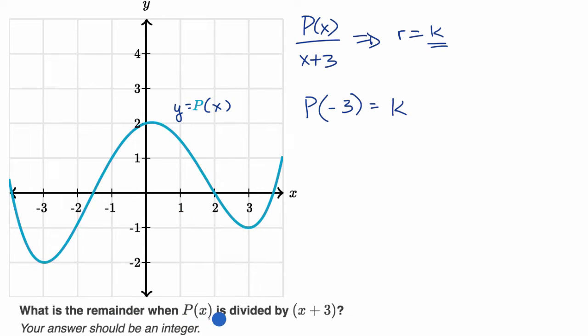What is the remainder when P(x) is divided by x plus three? It's going to be equal to P of negative three. P of negative three, it looks like it is equal to negative two. So our remainder is equal to negative two in this situation. Let's do another example.